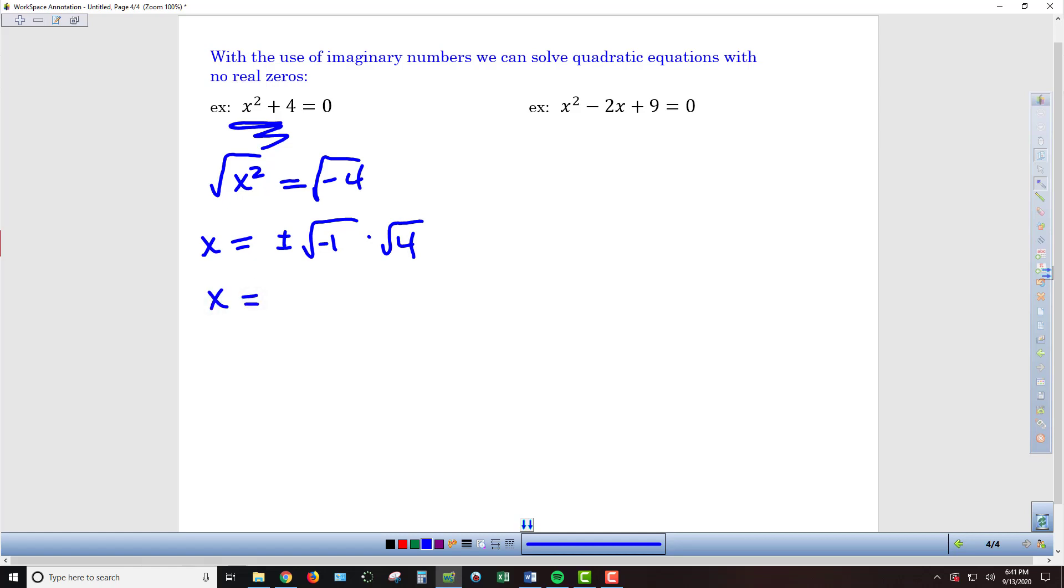We've got x = ±, hopefully we know that this equals i, times, and then the square root of 4 is 2, so we can clean this up and write it as x = ±2i.